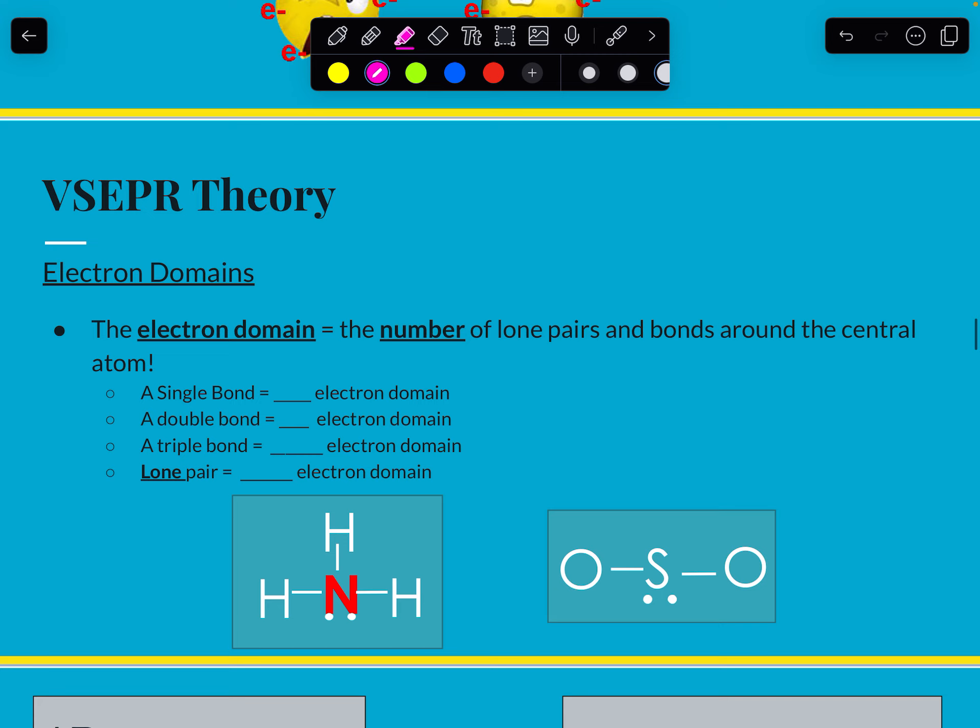So a vocab word that we'll be using a lot today is an electron domain. Think of the word domain as the space, the space that the electrons occupy. Now there's different types of domains. Domains can be lone pairs or bonded pairs. We're only looking at central atoms here. We don't care about the atoms on the outside, just the one in the center. So if we have a single bond, a single bond counts as one electron domain, a double bond still only counts as one electron domain. Because even though there may be four electrons being shared, they are all occupying the same space. Which means a triple bond is still just one domain. And then a lone pair will count as one domain. So each lone pair counts as one.